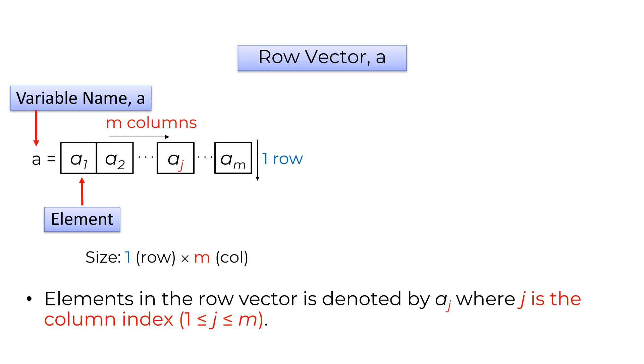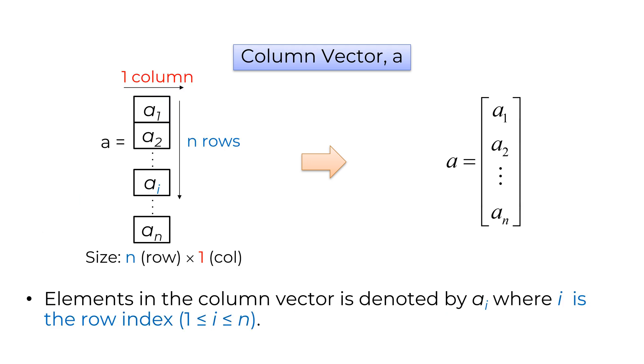To express the row vector in math, the square brackets are used to enclose the sets of elements with a space between elements. Similarly, the column vector is a one-dimensional array of elements in vertical or row direction. The indexing is also similar and A subscript I represents the ith element of column vector A. The column vector can be written using square brackets with vertical element arrangement. The size of the column vector is n by 1 vector.